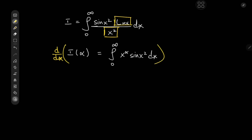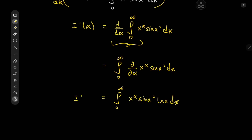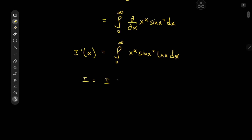We'll differentiate with respect to α and get I'(α) on the left, and on the right we have the derivative with respect to α of the integral from 0 to infinity of x^α times sine(x²) dx. We can switch the order of the operators now by the Leibniz rule, giving the integral from 0 to infinity of x^α times sine(x²) times log(x) dx. So the target integral is indeed I'(α) evaluated at α equal to negative 2.